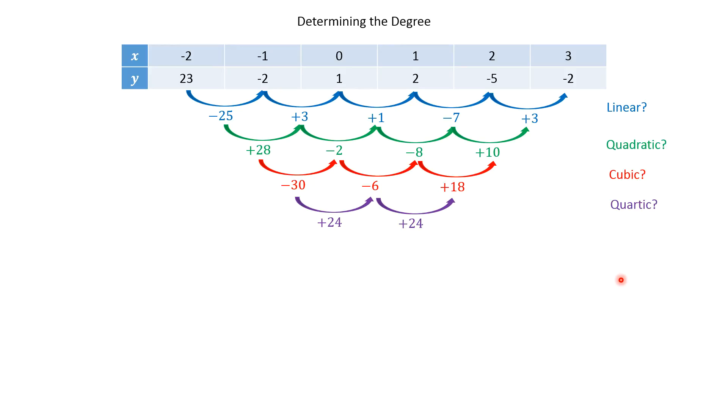Now, we could continue this to fifth degree, sixth, seventh, eighth. But we would need more points. Because if we went to the fifth degree, we'd only have one number. And you can't compare one number with nothing. You have to have at least two numbers to compare with. You don't really have to do that. Quartic is really as high as we're going to be going. But with more data, you could keep going like that. And so this one's quartic.